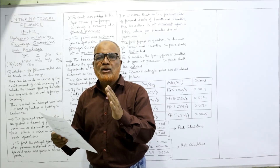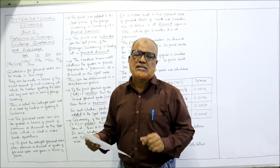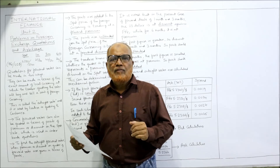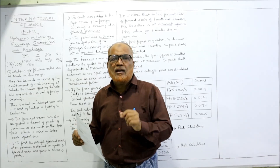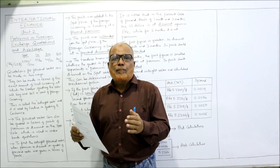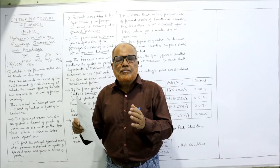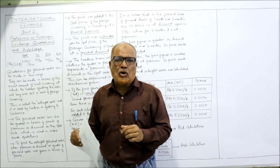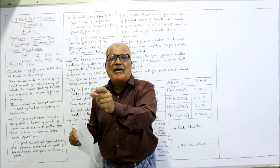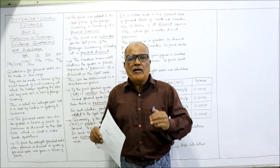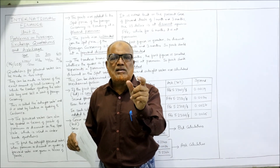We are required to find out the outright forward rate and indicate the spread. Spread means the difference between bid rate and ask rate. In theory, the foreign exchange dealer gives two quotations: one bid rate and one ask rate. The bid rate is the buying rate and the ask rate is the selling rate. For example, in India the exchange rate is rupees 85 per US dollar — suppose this is the buying rate and the selling rate is 85.50. So the banker quotes: 85.00 / 85.50. The first rate is the bid rate and the second is the ask rate.